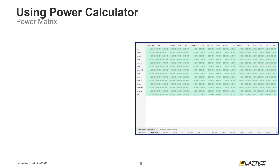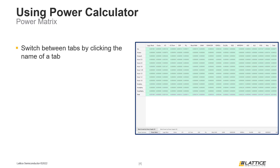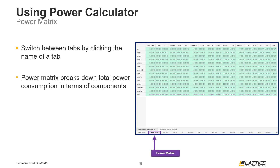The first Power Calculation tab we are going to review is the Power Matrix tab. The process for switching tabs is similar to Radiant's other tools with tabs. To switch between tabs in Power Calculator, select the name of the tab you want to switch to from the list of tabs at the bottom of the window. The location of the Power Matrix tab can be seen in the figure on the slide. The Power Matrix tab breaks down the total power consumption of a design in terms of power supply current and power supply wattage.